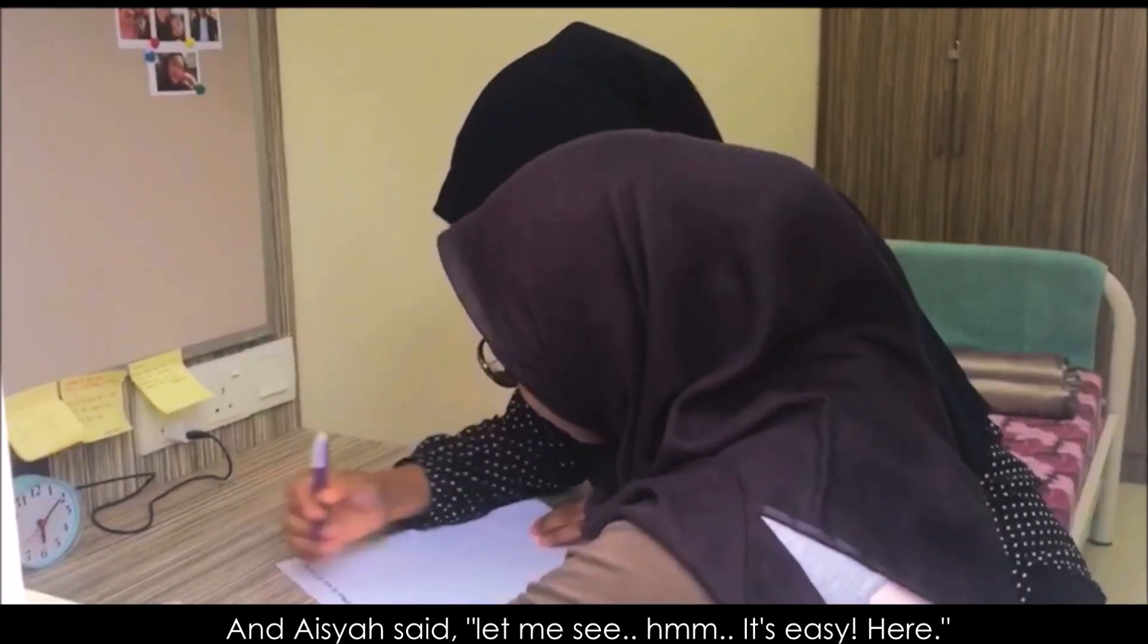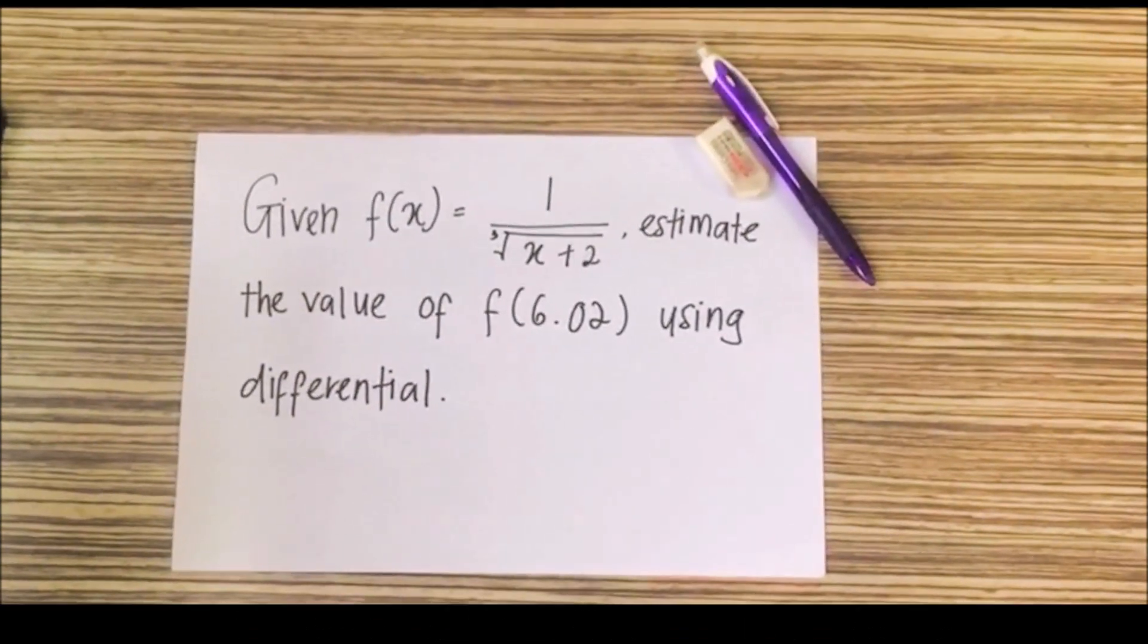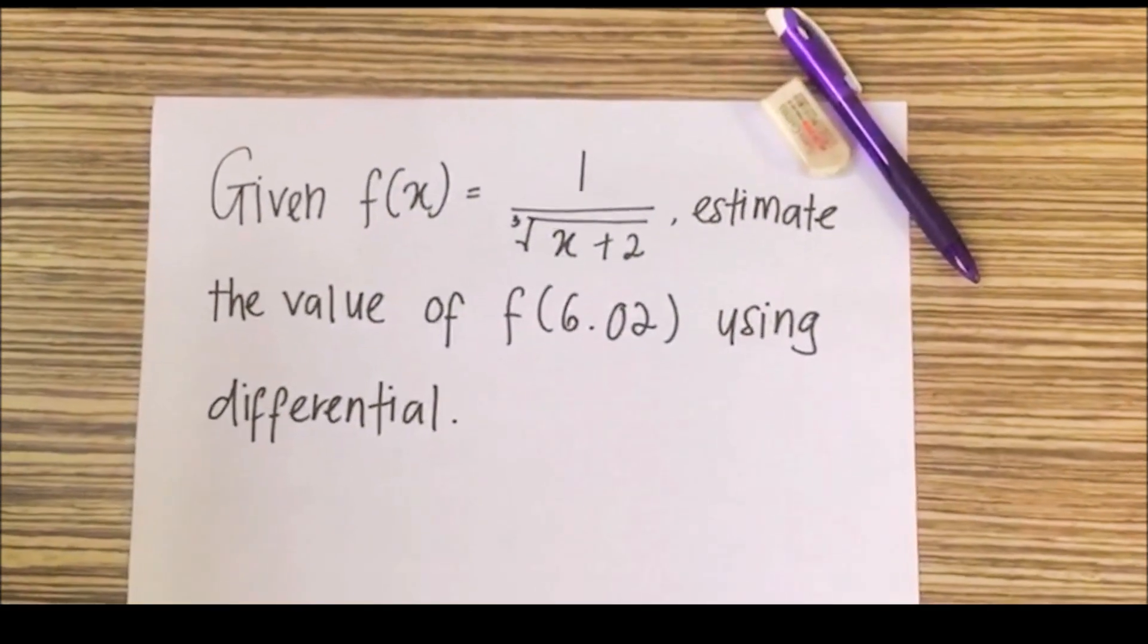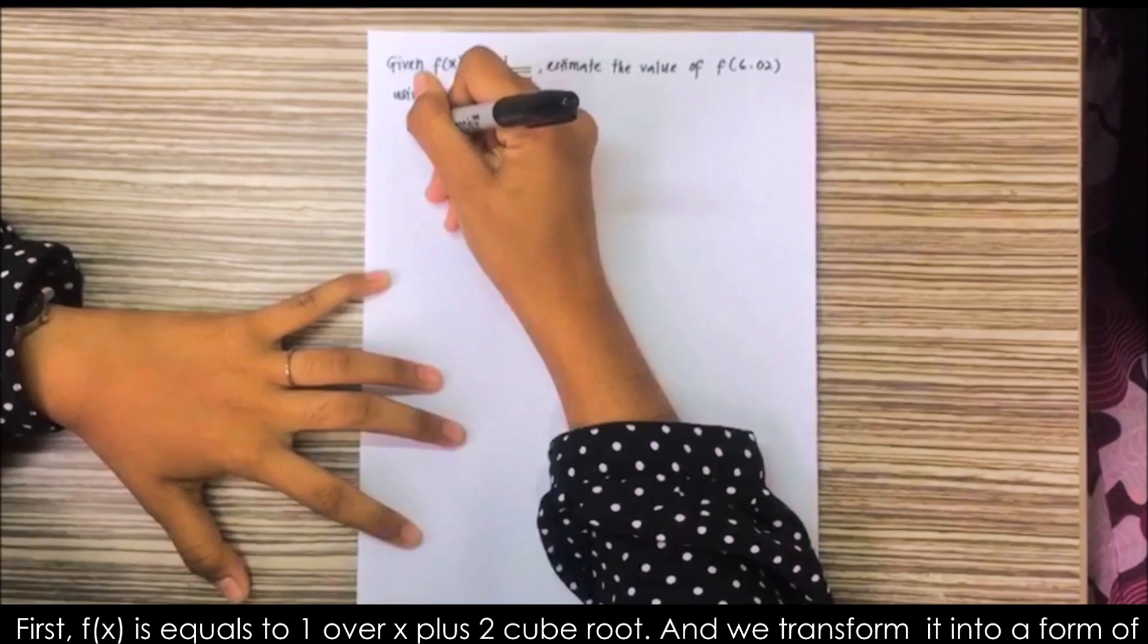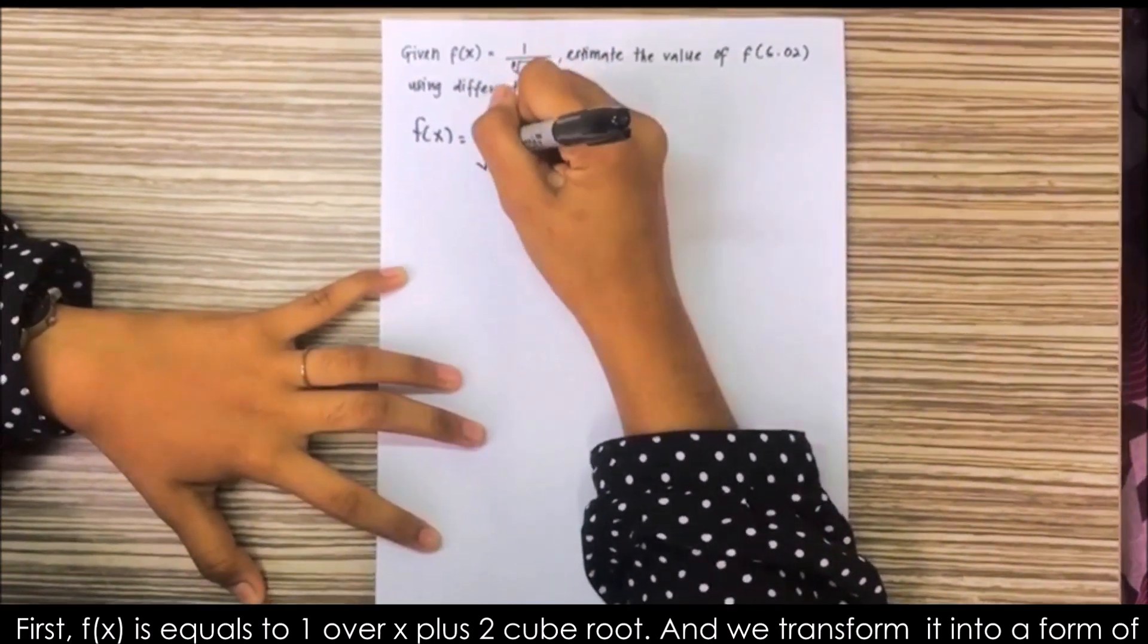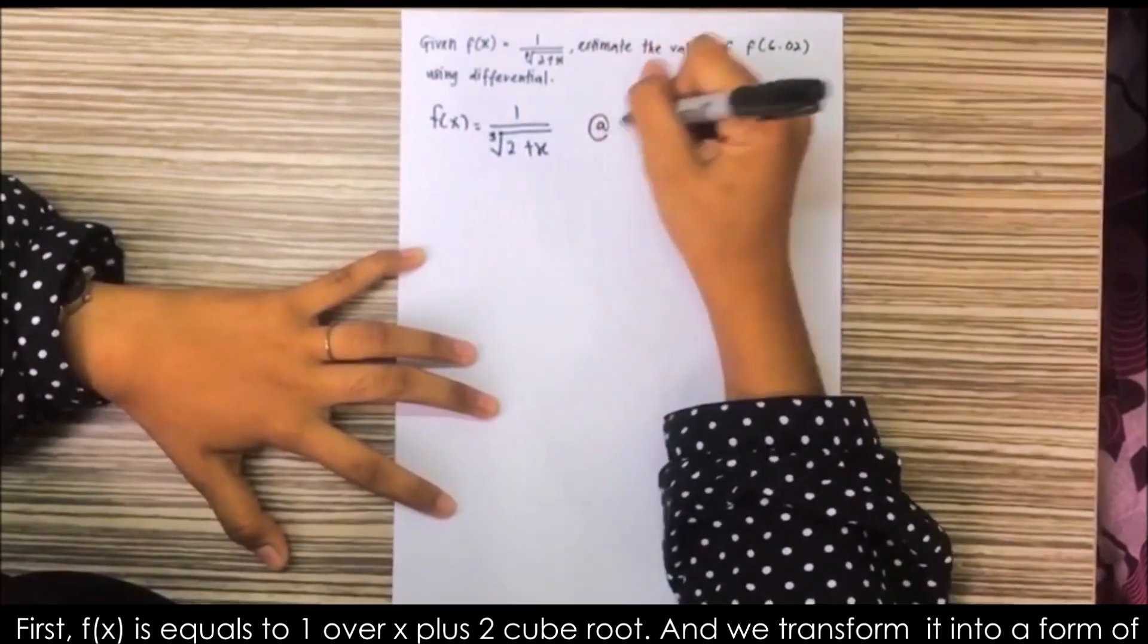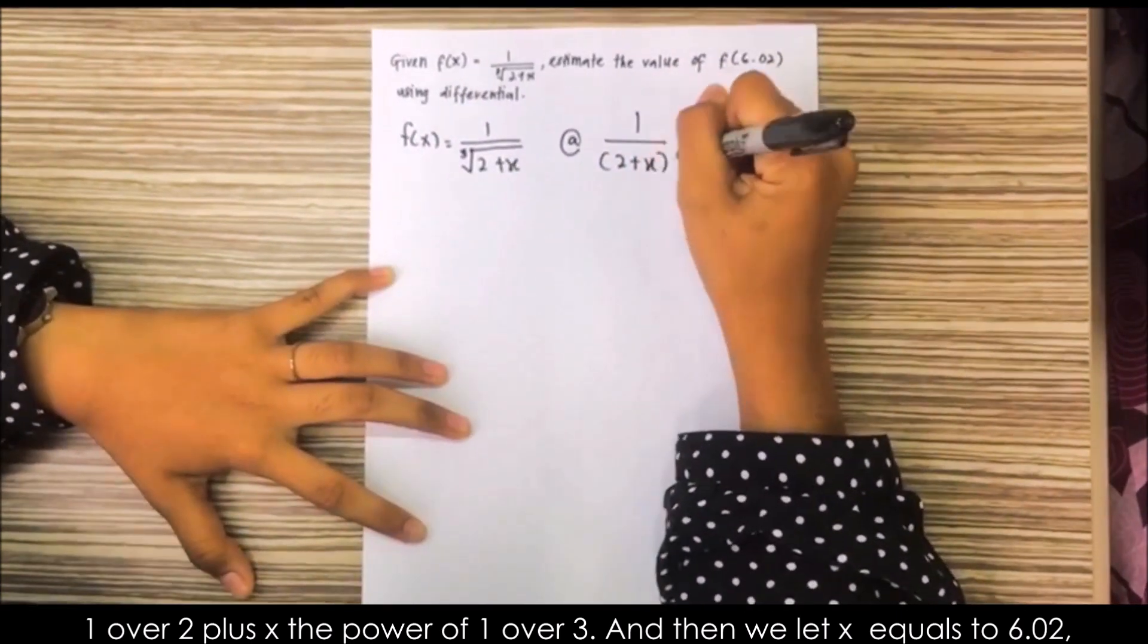Hmm, it's easy! Here! Given f(x) equals 1 over (x plus 2) cubed root, estimate the value of f(6.02) using differential. First, f(x) equals 1 over (x plus 2) cubed root. And we transform it into the form of (2 plus x) to the power of 1 over 3.